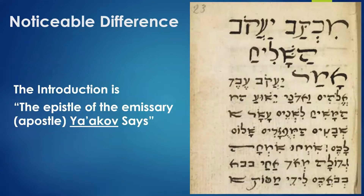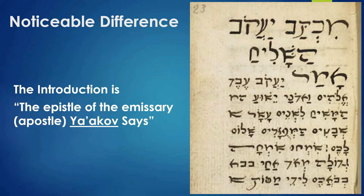And one of the exciting things that this particular manuscript holds up is the keeping of the law and the Torah. So as I mentioned, we're going to be looking for Yaakov. The introduction of this manuscript starts with the epistle of the emissary — which means apostle — and it says Yaakov says. That's what you see on your right; this is actually the manuscript. Why do we have Yaakov? Why do we have Jacob instead of James? That is because King James himself wanted to insert his name.